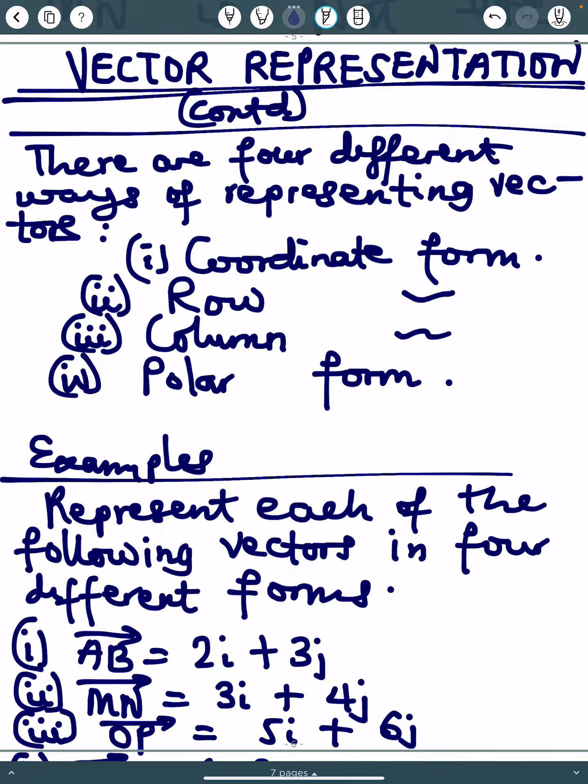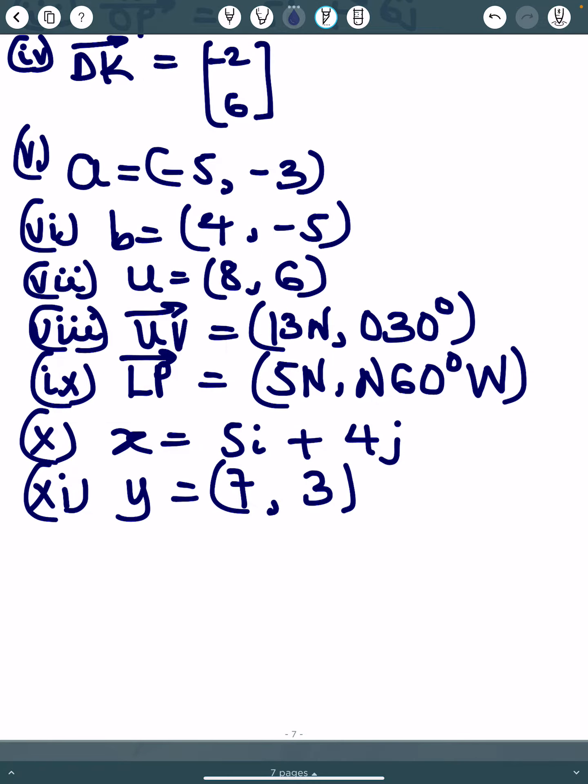In coordinate form, 2i plus 3j - this is in coordinate form. This vector is represented in column form. These vectors are represented in row form, and this is represented in polar form. Let me go over the different ways again and label them.